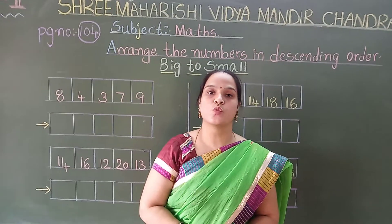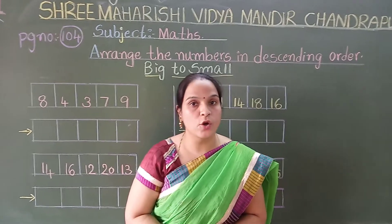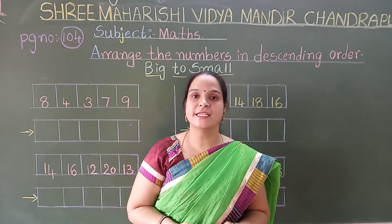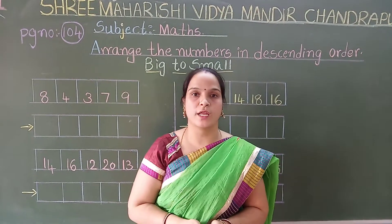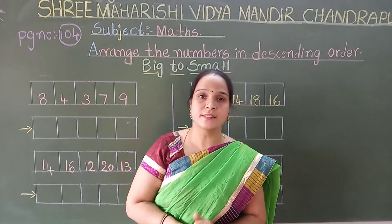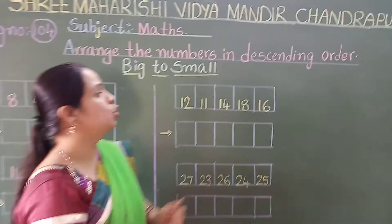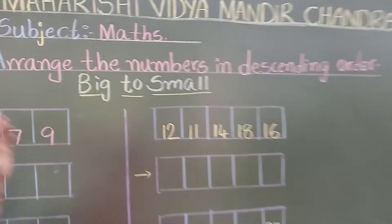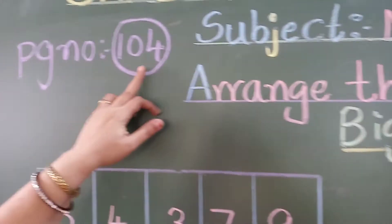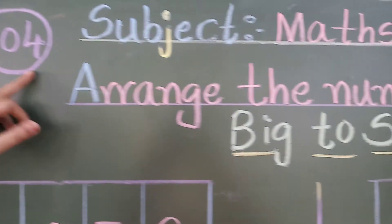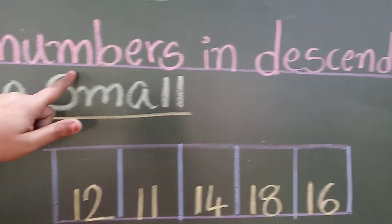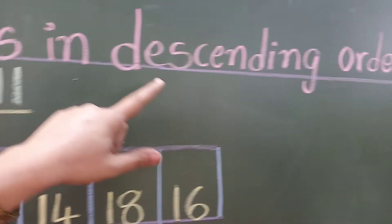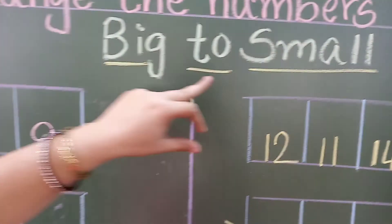First of all, descending order means what? Descending order means we have to arrange the numbers from bigger number to the smaller number. So from your fusion to textbook page number 104, let us read the heading: arrange the numbers in descending order — means big to small.